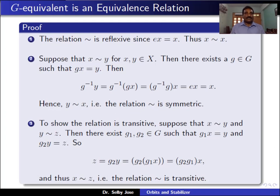To show it is symmetric, assume that x is related to y. This means there exists a g in G such that g*x equals y. Since G is a group and g is an element of G, g-inverse also belongs to G. Therefore, g-inverse * y equals g-inverse * (g*x), because y equals g*x, which is the same as (g-inverse * g)*x by the second property of group action. Since g-inverse * g equals e, we have g-inverse * y equals e*x equals x. That means we obtain g-inverse in G such that g-inverse * y equals x, meaning y is related to x. So this relation is symmetric.